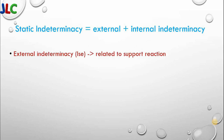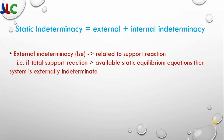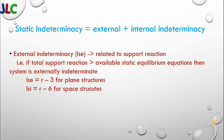External indeterminacy is related to the support reaction. If support reaction is greater than the available static equations, then the system is said to be externally indeterminate. It is r minus 3 for a plane structure and r minus 6 for a space structure, where r is the number of independent external reactions.